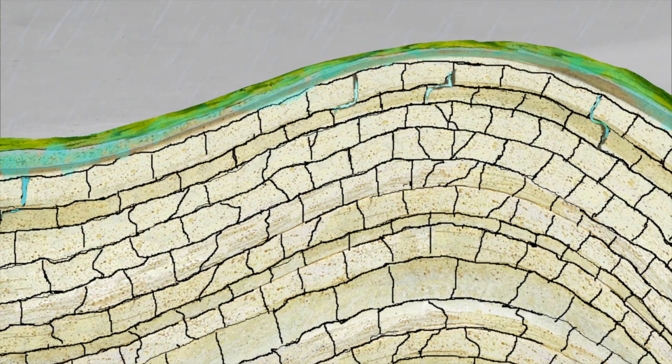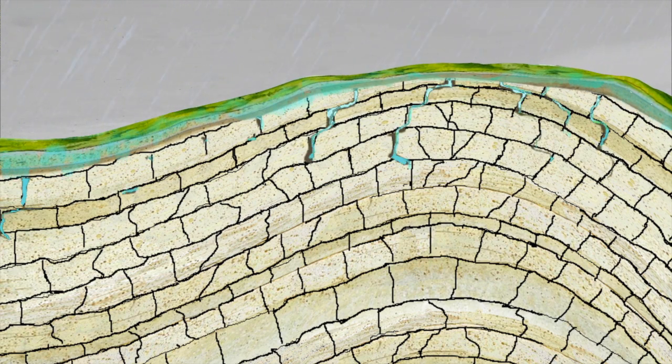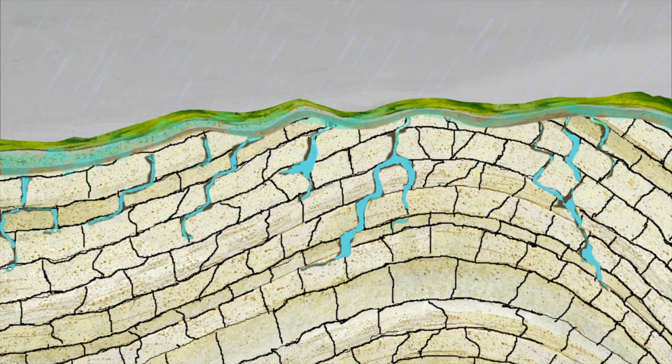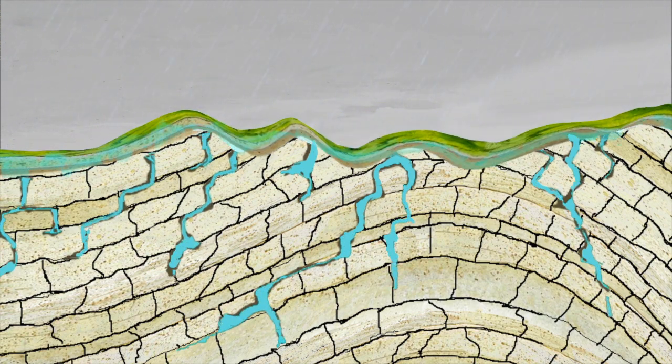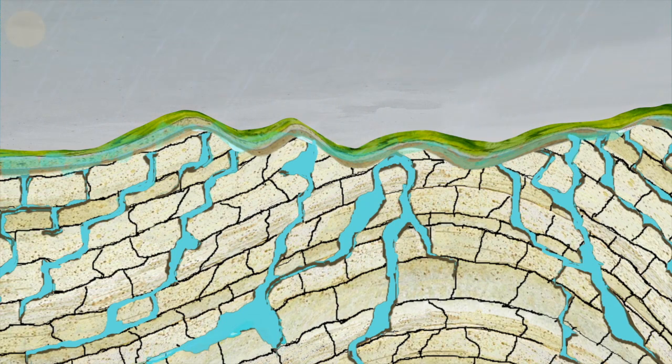When water comes into contact with this gas, it becomes acidic. A chemical reaction then occurs with the limestone. Gradually, the limestone dissolves, the surface erodes and the cracks grow.